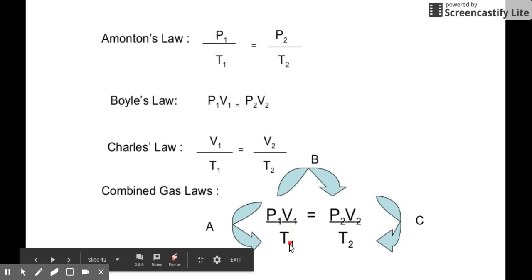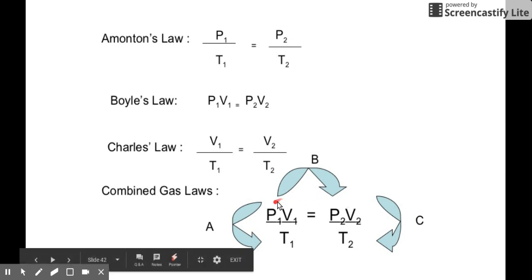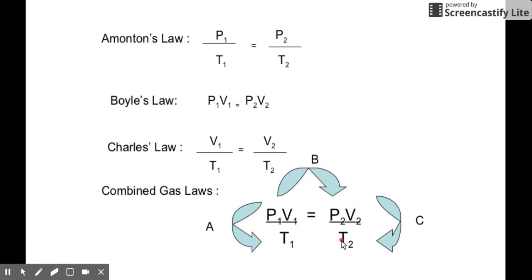So the final expression of the Combined Gas Law is: P1 V1 / T1 = P2 V2 / T2. By memorizing the Combined Gas Law, you already know the equations of Boyle's, Charles', and Amonton's Law. Boyle's Law is P1 V1 = P2 V2. Charles' Law is V1/T1 = V2/T2. Amonton's Law is P1/T1 = P2/T2. So it's a complete package of all three gas laws.